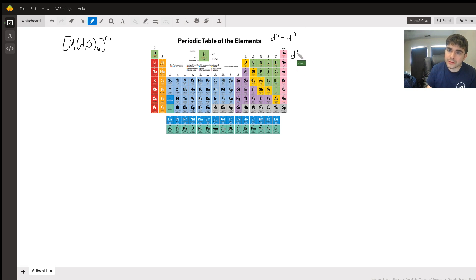so D4 to D7 can be either high spin or low spin. Whilst D1 to D3, I believe, I could have this wrong, considered low spin.